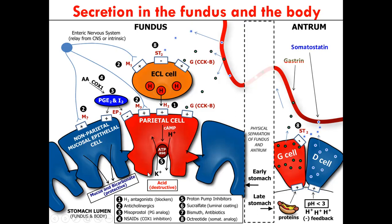Anticholinergics — I've already mentioned atropine. Atropine inhibits the interaction between acetylcholine and the M3 receptors. When acetylcholine binds to M receptors, it stimulates cells to increase secretions. So if you block the interaction between acetylcholine and M receptors, secretion of acid and pepsinogen will reduce. That is why you can use anticholinergic drugs like atropine.